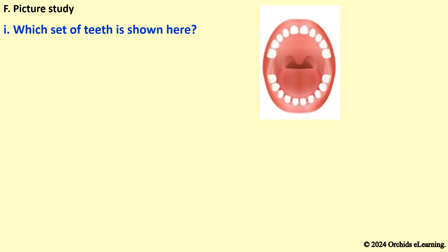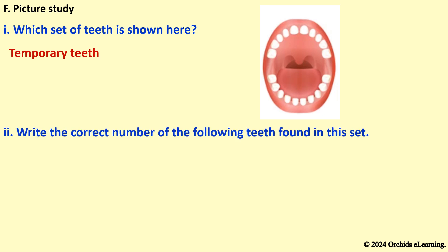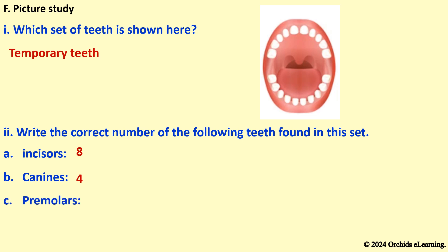Picture study: Which set of teeth is shown here? Temporary teeth. Write the correct number of the following teeth found in this set. Incisors — 8. Canines — 4. Premolars — 0 (not present in temporary set).